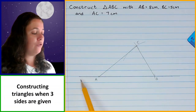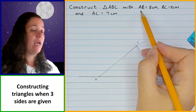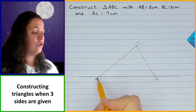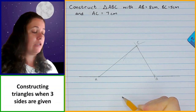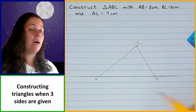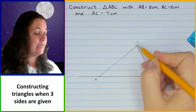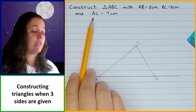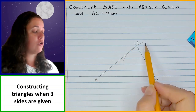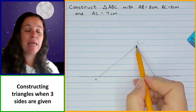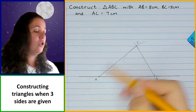Just to recap: we first draw a line and mark A. Then we use our compass and ruler to measure a radius for AB, place the needle on A, and make an arc across the line to find where B needs to be. Then we make the radius the length of BC, measure from B, and draw an arc. Then we make the radius the same as AC, measure from A, and draw an arc so it crosses the previous arc at a point of intersection — that is point C. Then we join up the other two sides to finish the triangle.